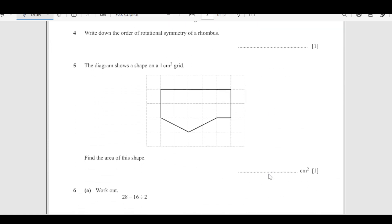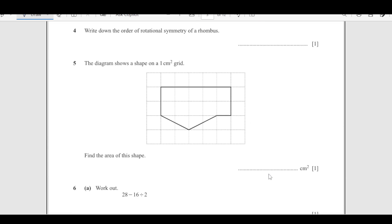Number 4: write down the order of rotational symmetry of the rhombus. Rhombus is a shape like this having all sides equal. When you rotate until 360, you are going to get the same shape 2 times. So rotational symmetry is of order 2.